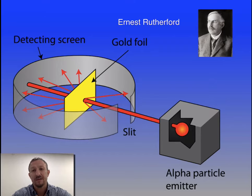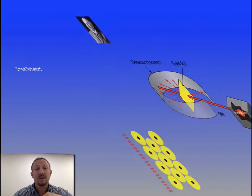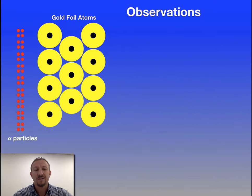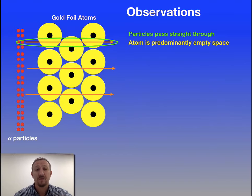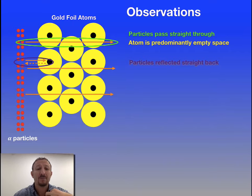Remember that alpha particles are positively charged. And what he noticed was that he got this scattering of these alpha particles. Some pass straight through, some are deflected, and some rebounded. And this image basically shows you how the observations occurred. We've obviously got our first particles going straight through. And from this, he concluded that the atom is predominantly made up of empty space. Then he's got particles which have rebounded.